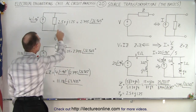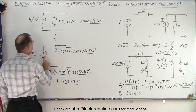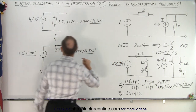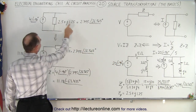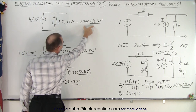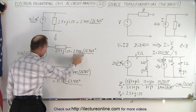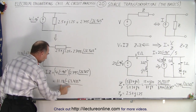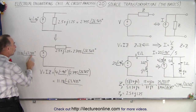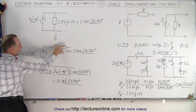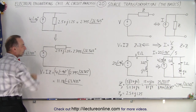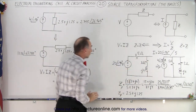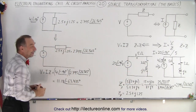Now we convert this back to a voltage source circuit. To get the voltage, we simply take the current times the impedance — this current times this impedance. We get the voltage, and that becomes the new voltage source for this part of the circuit, with the impedance in series. So now we've taken something that looks fairly complicated into something that's much easier to deal with.